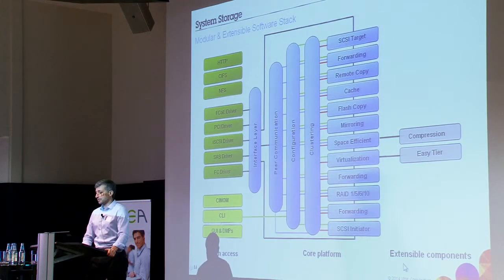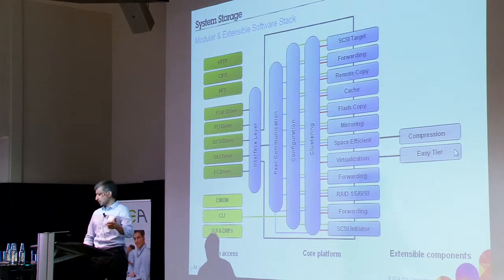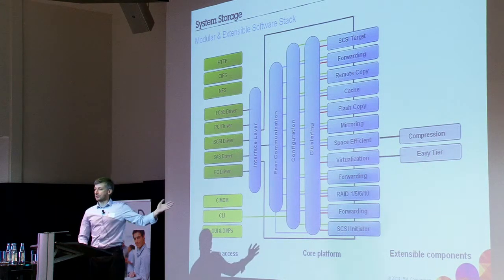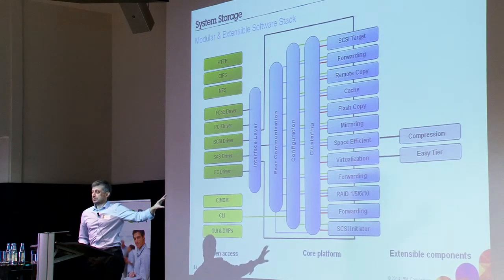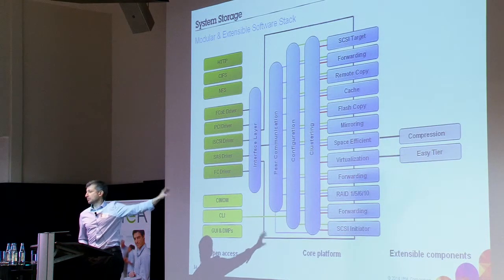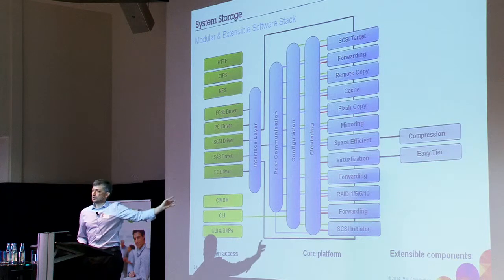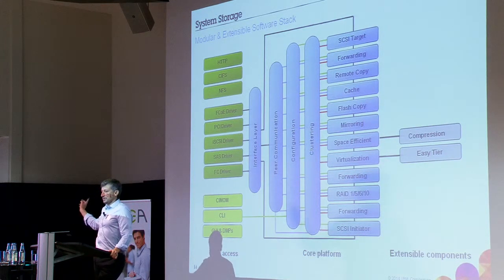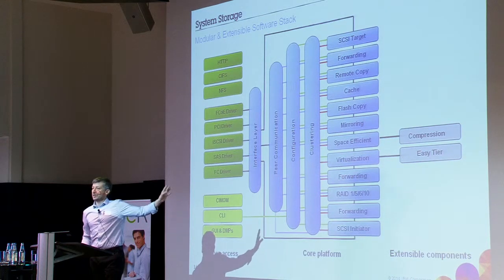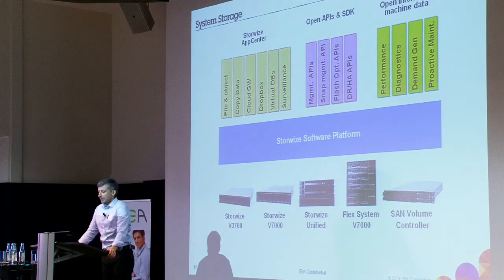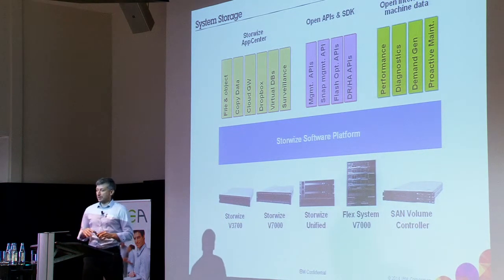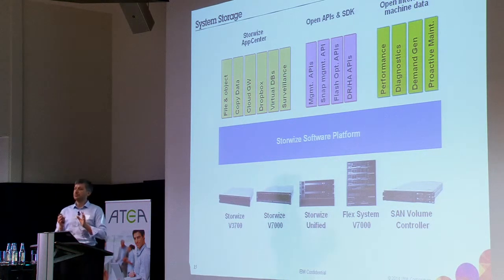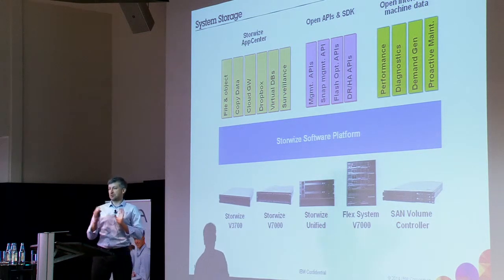And of course, the next part is extensible components. Right now we have access to two of those — first is compression, next is easy tiering. As you can see from this picture, we can attach whatever we want up here. We can create even deduplication, we can attach even three different tiers for storing the data. This software stack for the Storewise family is easy to extend because we have two different parts: access, and the possibility to add additional components.